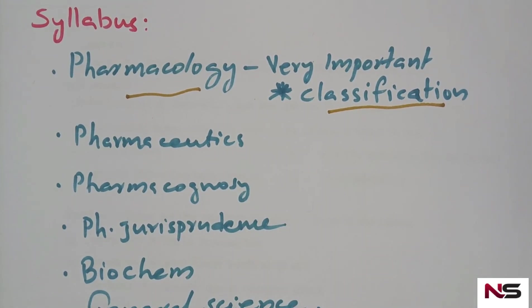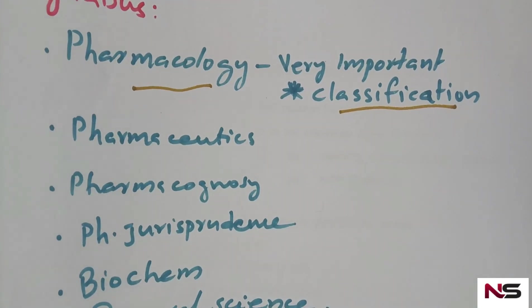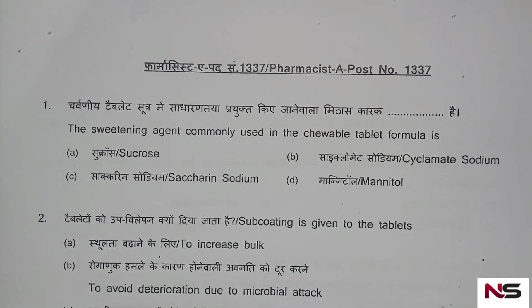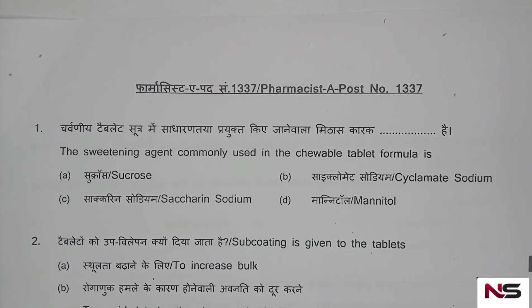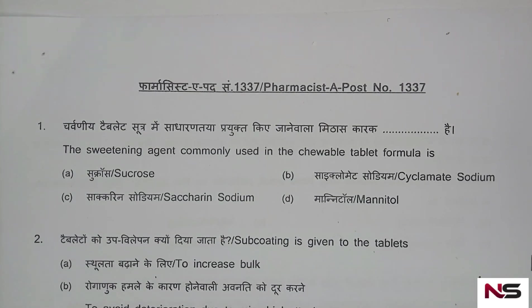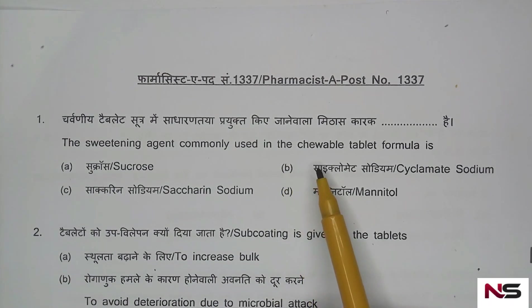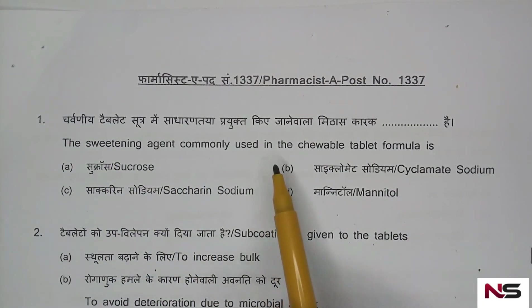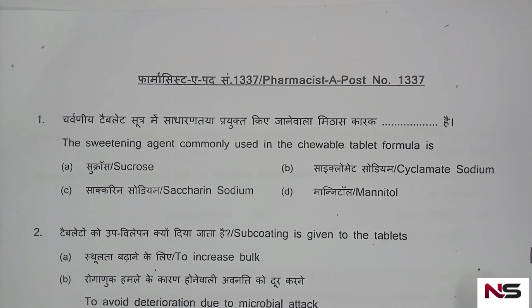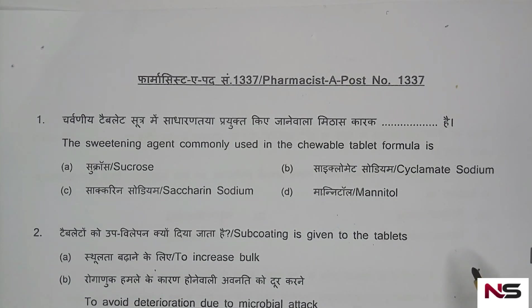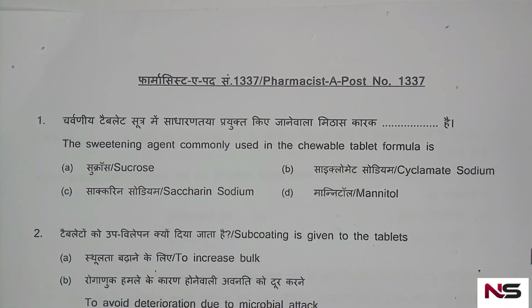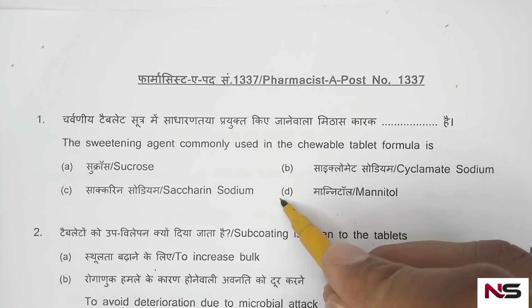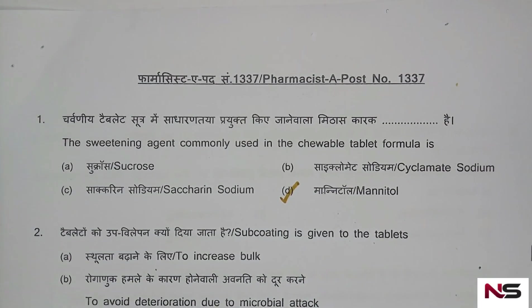Now we will move to the ISRO pharmacist question paper held in 2017. Question 1: The sweetening agent commonly used in the chewable tablet formula. Options are: A) sucrose, B) cyclamate sodium, C) saccharin sodium, D) mannitol. The correct answer is option D, mannitol.